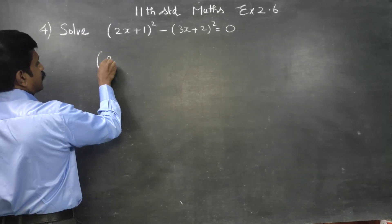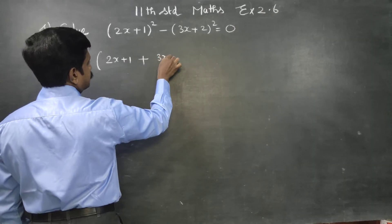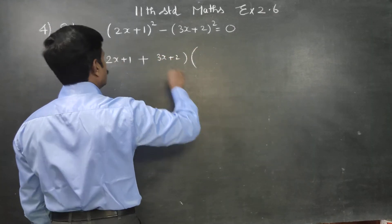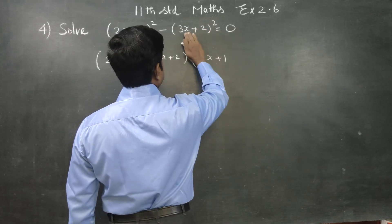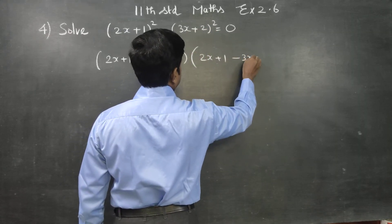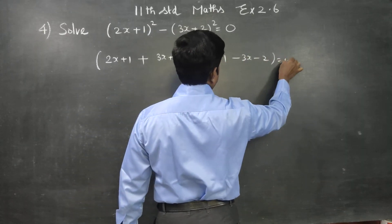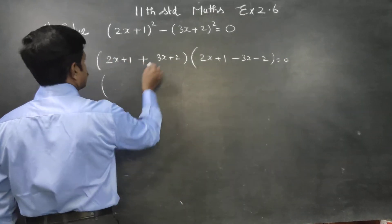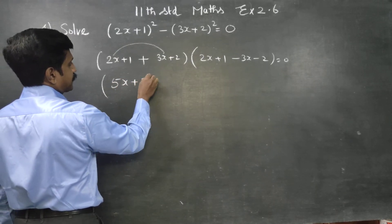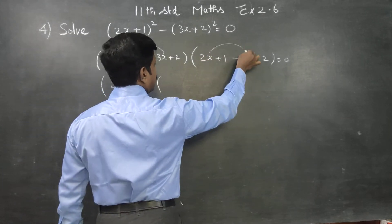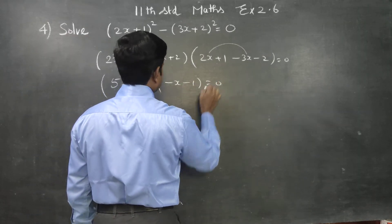a square minus b square can be written as a plus b into a minus b. This can be simplified as 5x plus 3, and this can be simplified as minus x minus 1, is equal to 0.